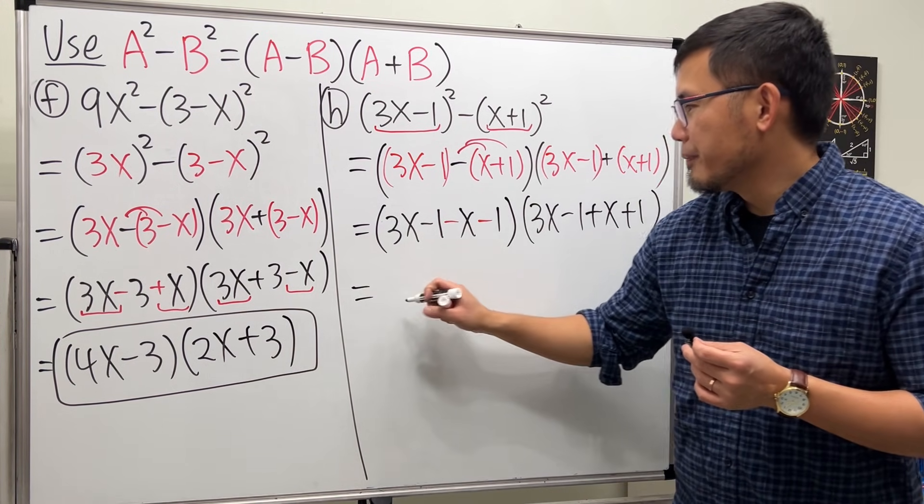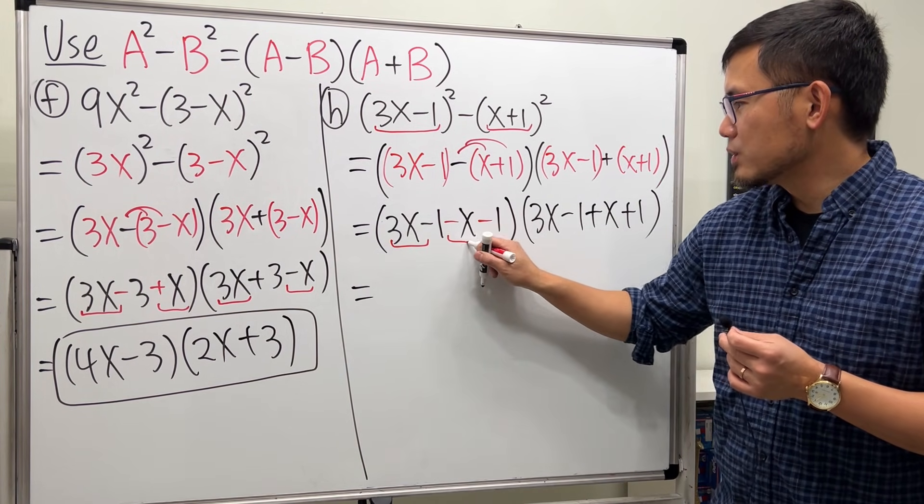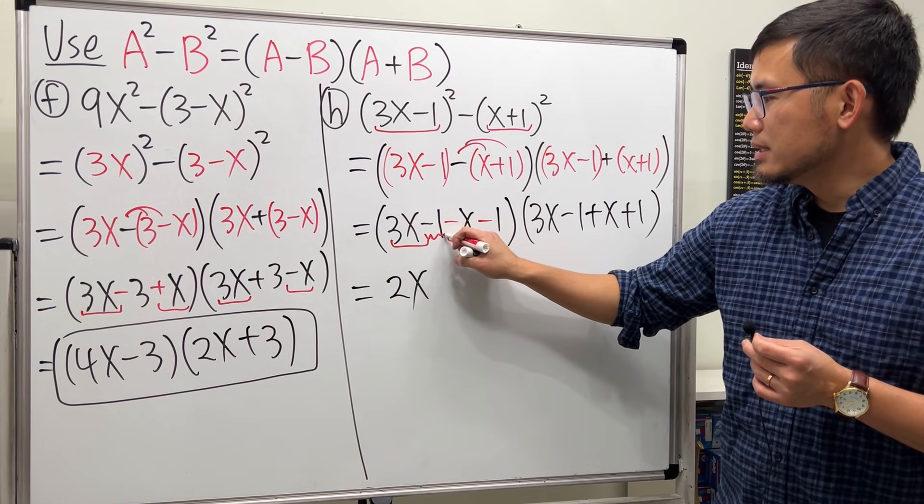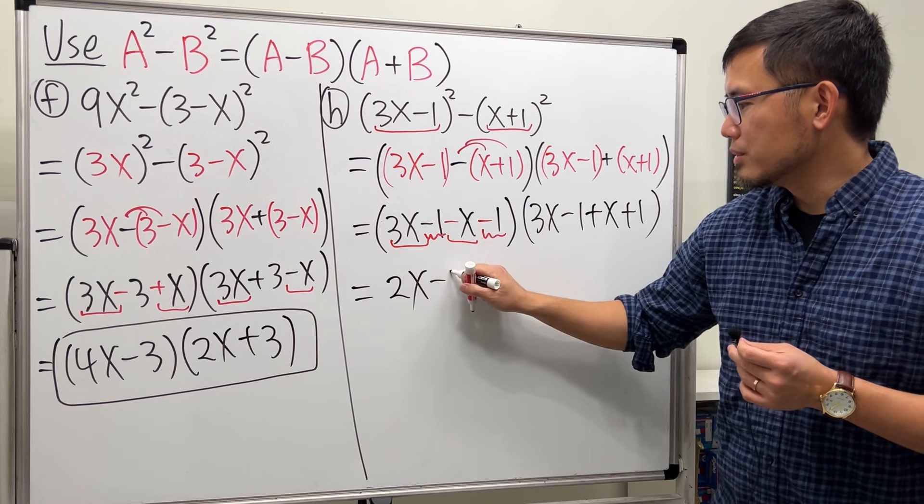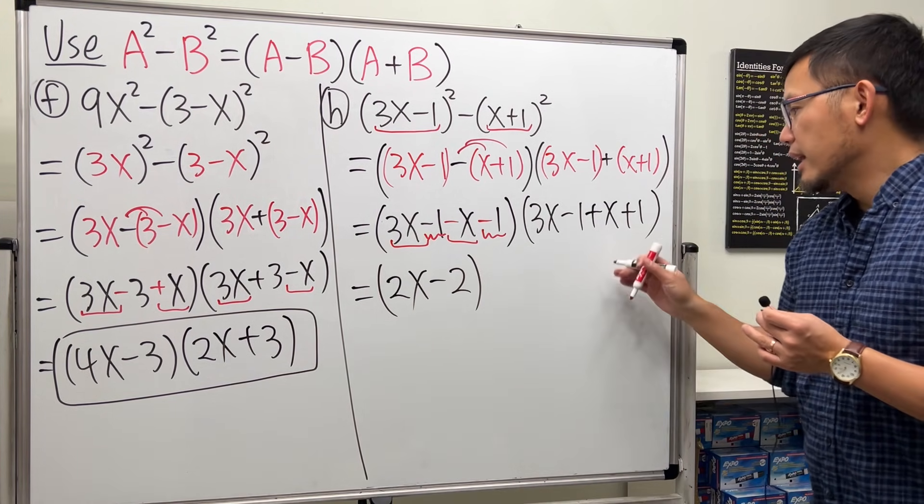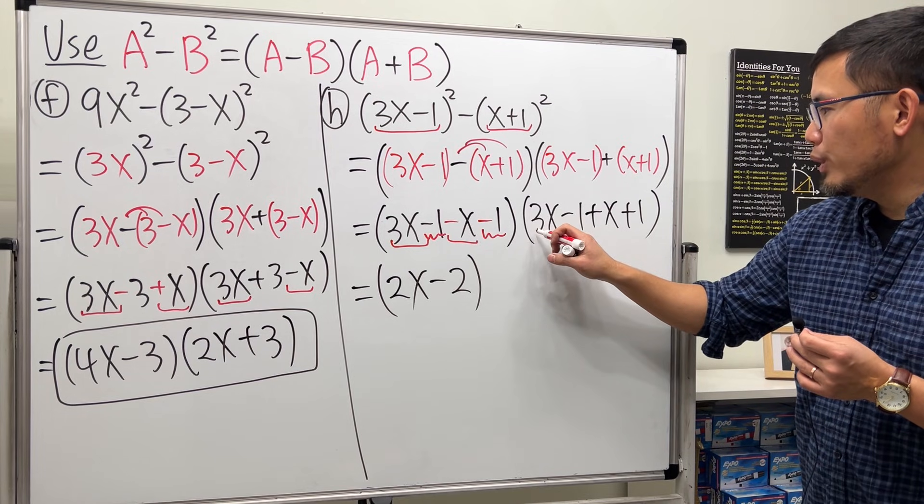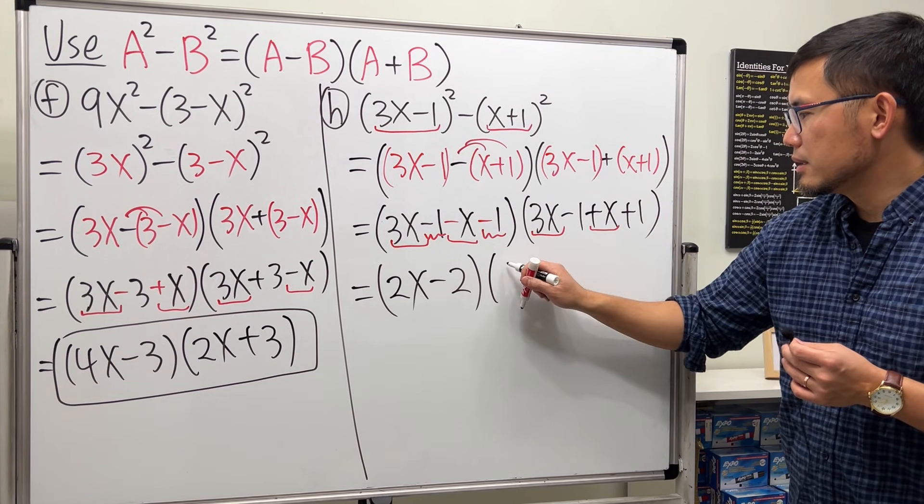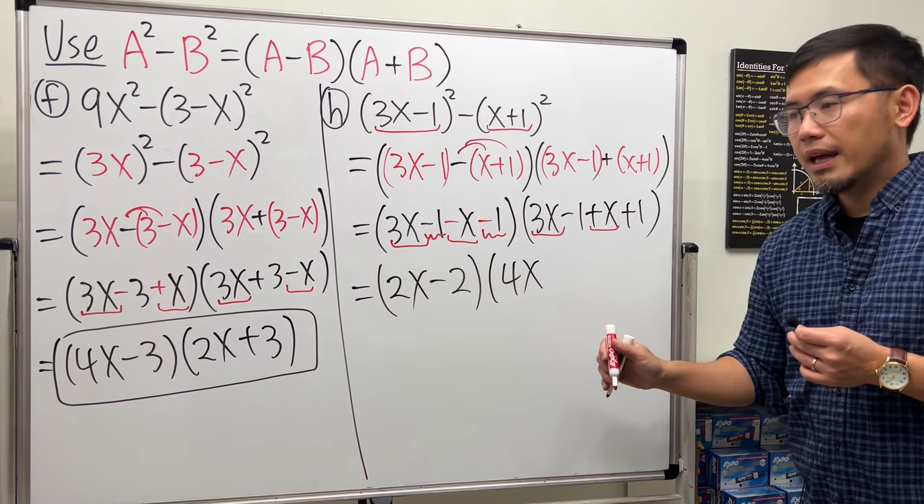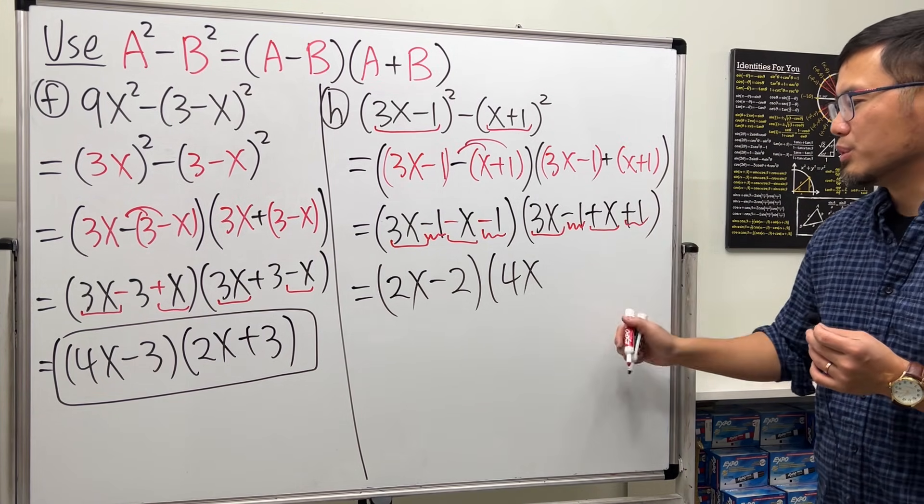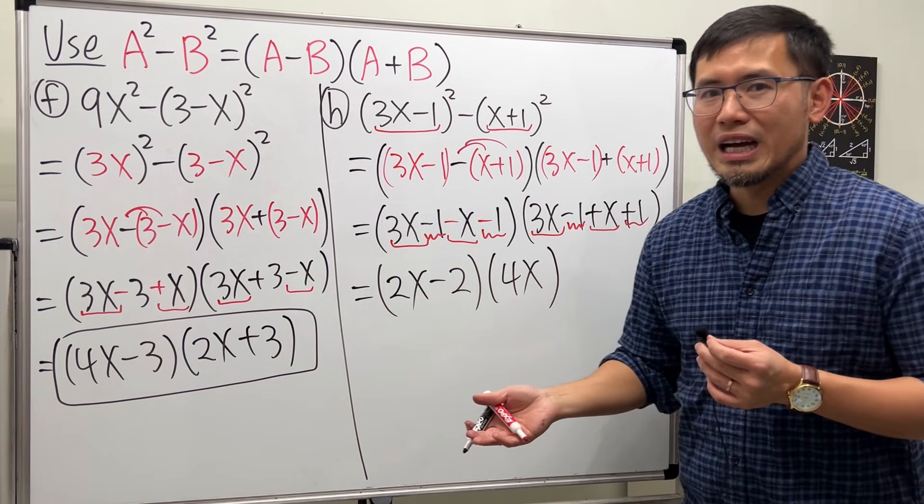All right, now let's see what we have next. It's 3x minus x, that's 2x, minus 1 minus another 1, that's minus 2. So that's the first part. Then continue, you see that here we have 3x plus x, that's 4x, and minus 1, so minus 1 plus 1 is just zero. So it looks like this is what we have.